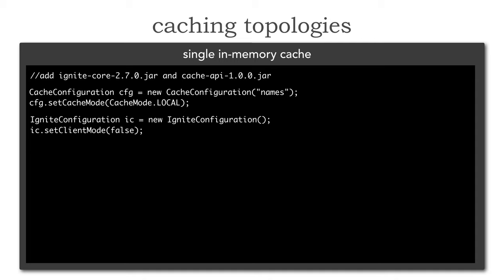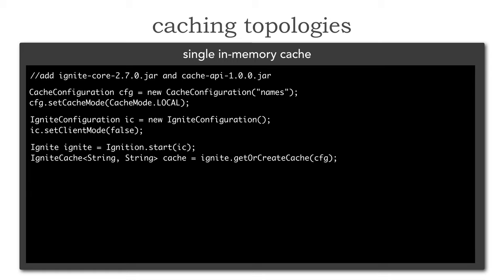I set the client mode in the Ignite configuration to false, which tells Apache Ignite that this is not a client-server cache or a distributed cache, but just a local cache without a client associated with it. I start Ignite within my in-memory process using ignition.start, passing in that Ignite configuration. Then I call getOrCreateCache based on that configuration, specifying a local cache named 'names'. That gives me an Ignite cache where the first value is the customer ID and the second is the customer's name.